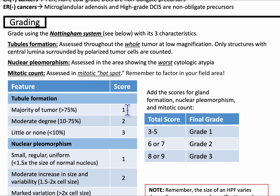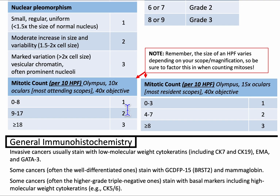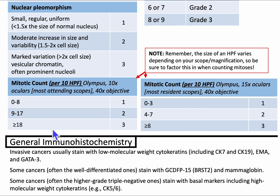For mitotic count, based on the Olympus using 10x oculars and 40x objectives per 10 high power fields: zero to eight is score one, nine to 17 per 10 high power fields is score two, and greater than or equal to 18 is score three.